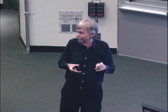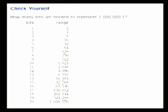How many bits does it take to represent a million to one range? With one bit you can represent two levels; with two bits, four; scaling up: 8, 16, 32. By 10 bits you're at 1024; by 20 bits you're at 1024 squared. So 20 bits ought to do it.